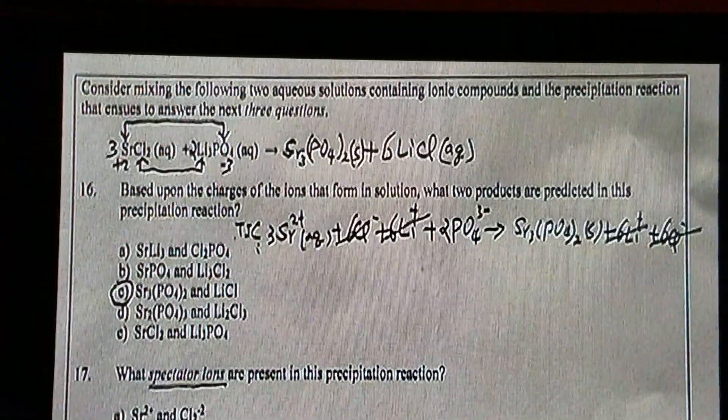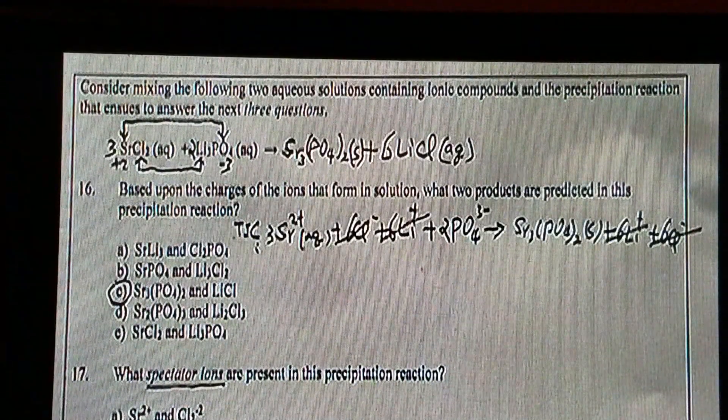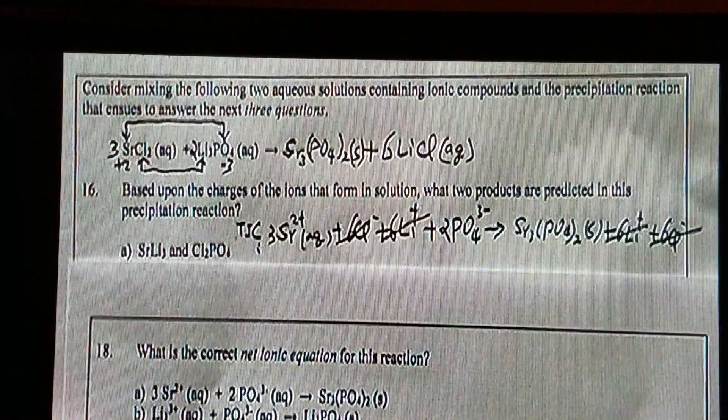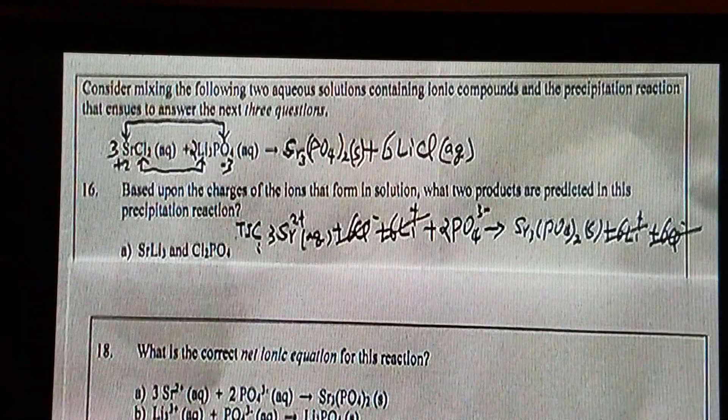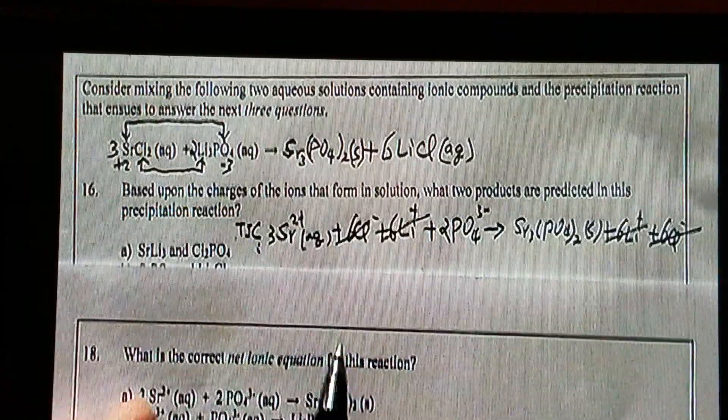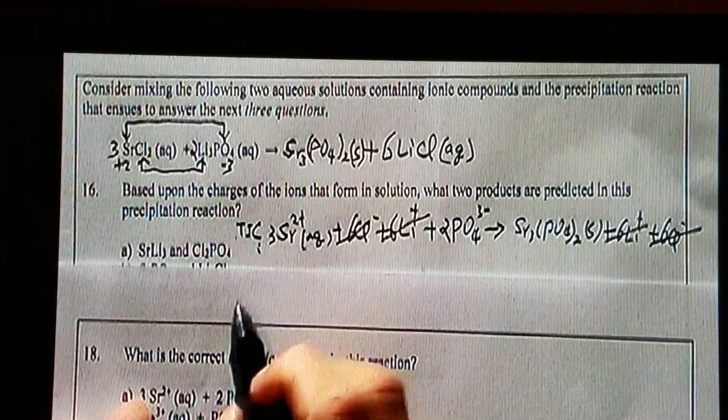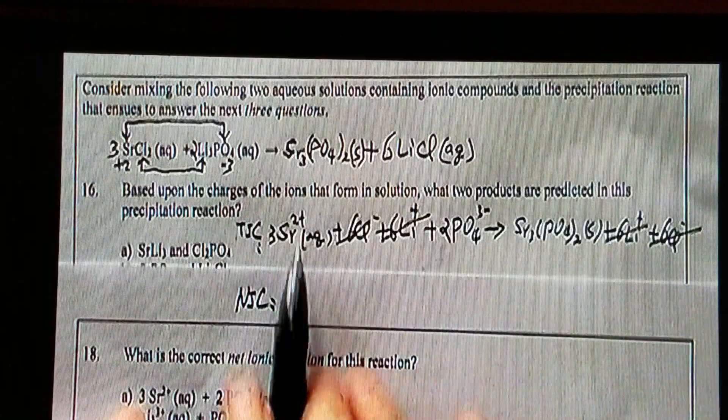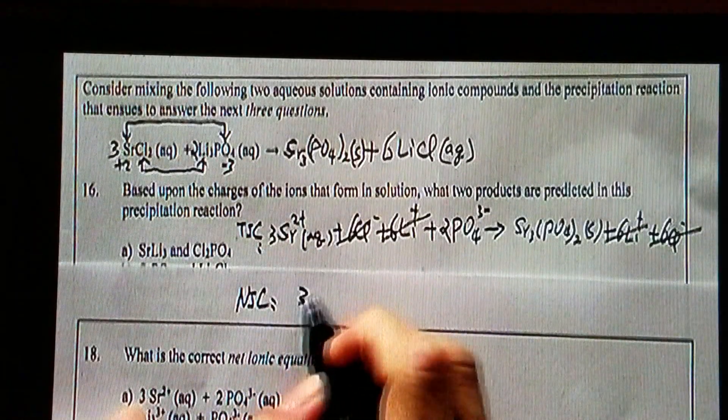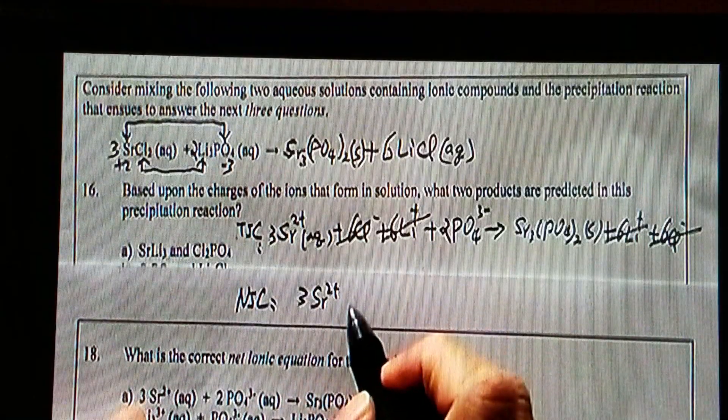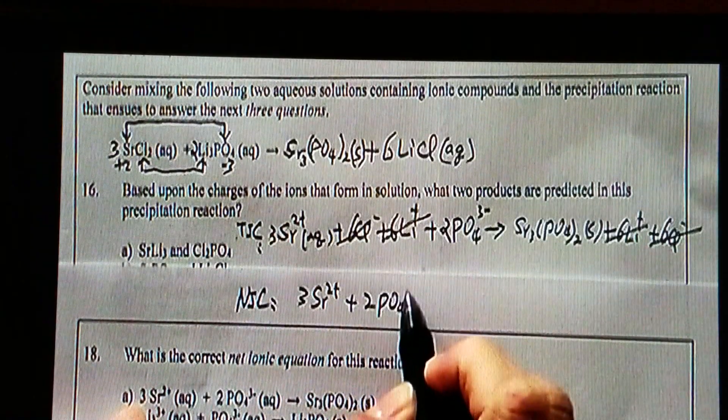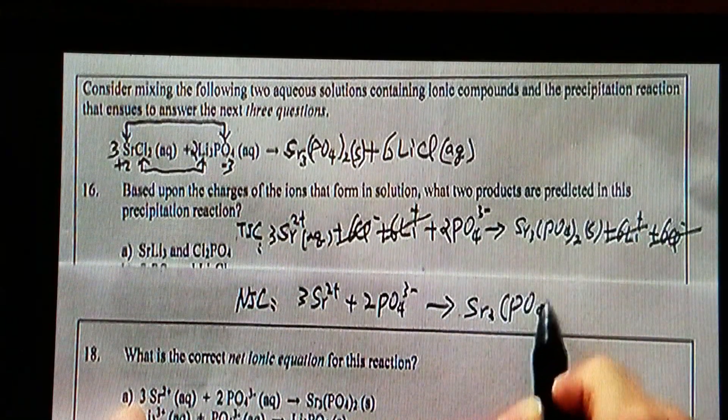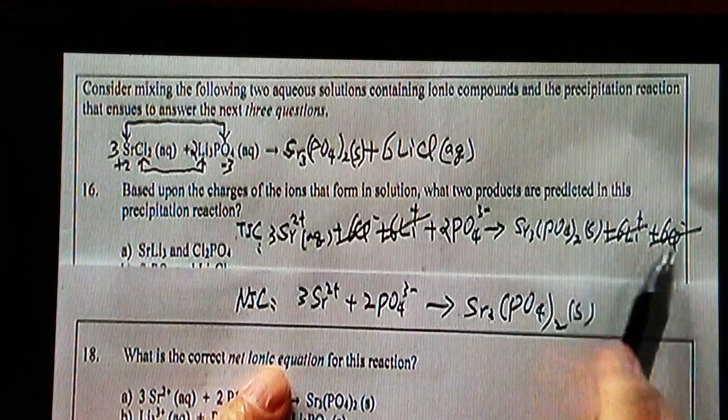And now let's look at number 18. We'll all use the same material. What is the correct net ionic equation? This is the total ionic equation. Net ionic equation, NIE, is after you cancel the spectator ions, whatever's left, you just write that down. Now we'll have three Sr²⁺ plus two PO₄³⁻ forming Sr₃(PO₄)₂.